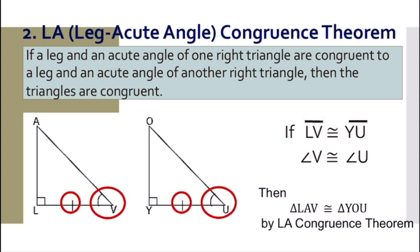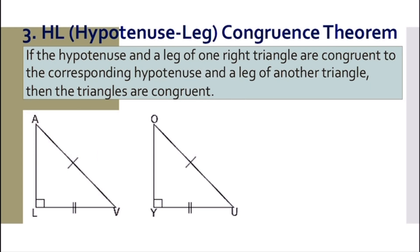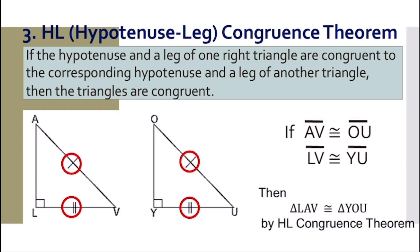For number three, we have the HL congruence theorem, or hypotenuse and leg. If the hypotenuse and a leg of one right triangle are congruent to the corresponding hypotenuse and a leg of another right triangle, then the triangles are congruent. For example, if line segment AV is congruent to line segment OU, which is our hypotenuse, and line segment LV is congruent to line segment YU, our marked leg, then triangle LAV is congruent to triangle YOU by the HL congruence theorem.